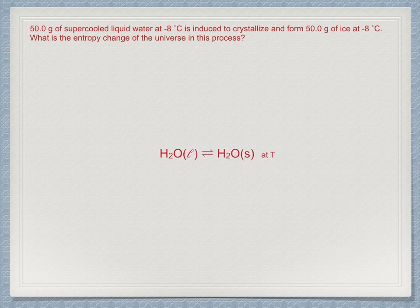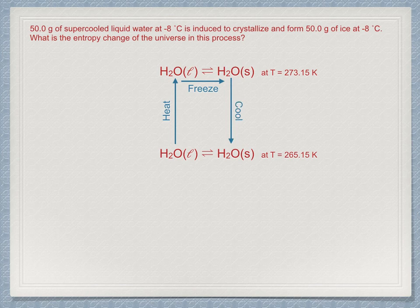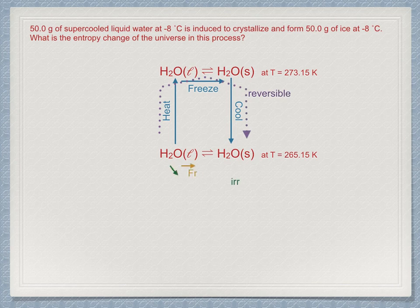Here is what we do. We heat the water reversibly from minus 8 degrees up to 0 degrees Celsius, allow it to freeze reversibly, then reversibly cool the ice back down to minus 8 degrees. For state functions, this path must be identical to the irreversible freezing at minus 8 degrees Celsius.